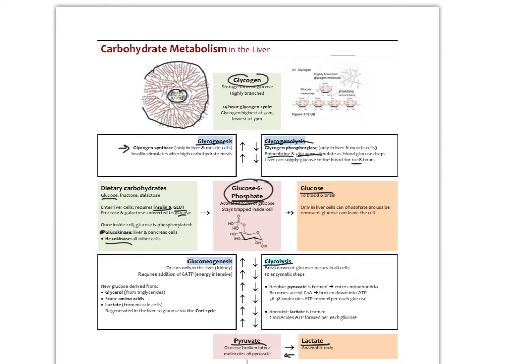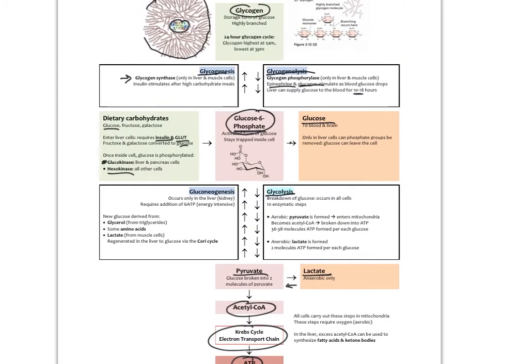The liver can also synthesize new glucose via gluconeogenesis — only in the liver, a little bit in the kidneys. This is a pretty energy-intensive process, using glycerol from triglycerides, some amino acids, and lactate. The liver can make new glucose and send it out to feed the body. This process is stimulated by catecholamines and glucagon, and will increase your blood sugar.